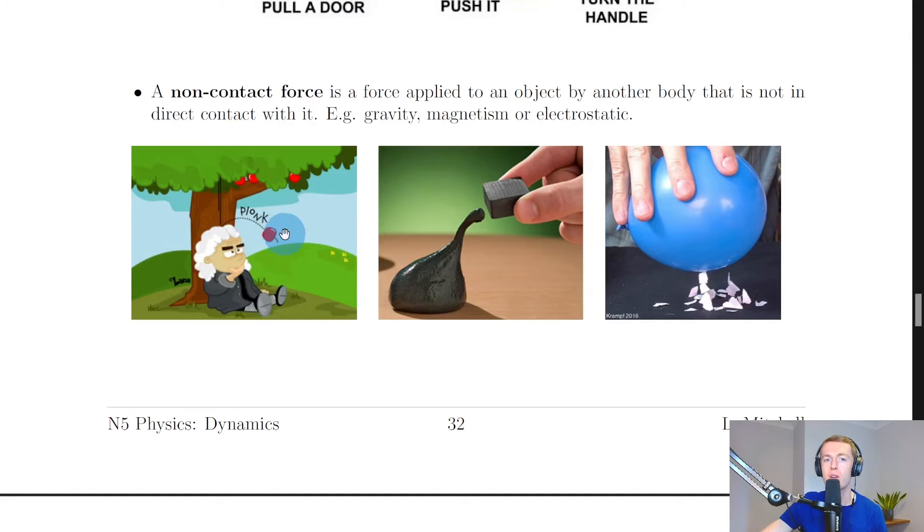Looking at the pictures here, the first one shows you an apple falling due to gravity on Sir Isaac Newton's head. We know that gravity is the force acting downwards on all objects. We then have a picture demonstrating a non-Newtonian fluid which is interacting with a magnet, but it's doing so at a distance. There's no physical contact between the two objects because the substance has magnetic properties.